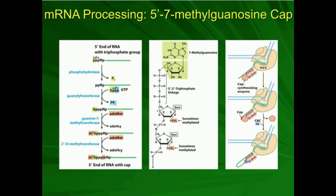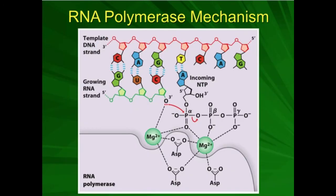The other thing is when you get to the ribosome, there's a part of the ribosome that recognizes this 7-methylguanosine cap. So it has three functions, and we're going to look at how this cap is added. This is the 5' end of the mRNA. Remember when we talked about the mechanism of RNA polymerase — imagine the very first nucleotide that we use to make the RNA. All others have a 3' attack on the 5' phosphate.